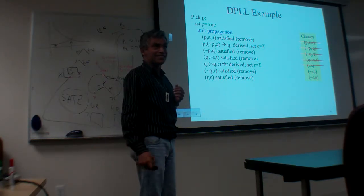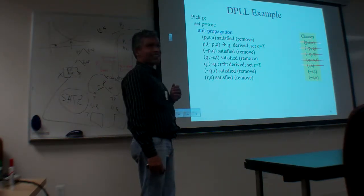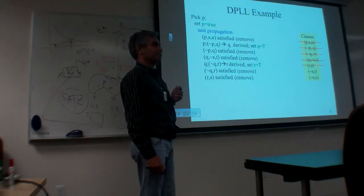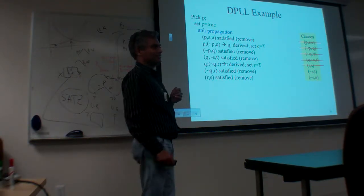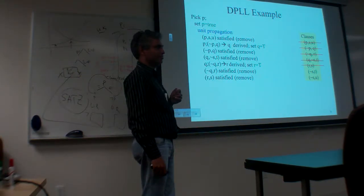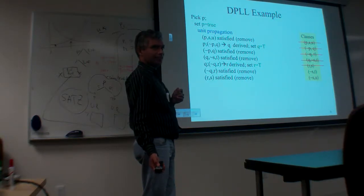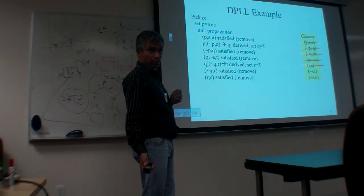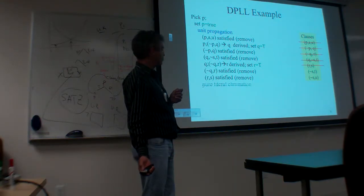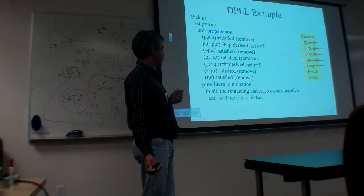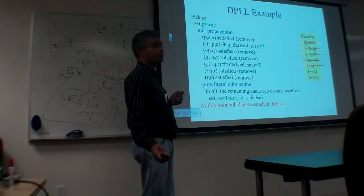At this point, in the remaining clauses, S is appearing only negatively. So I can go ahead and set S equals false. I'm done. This is backtrack-free.